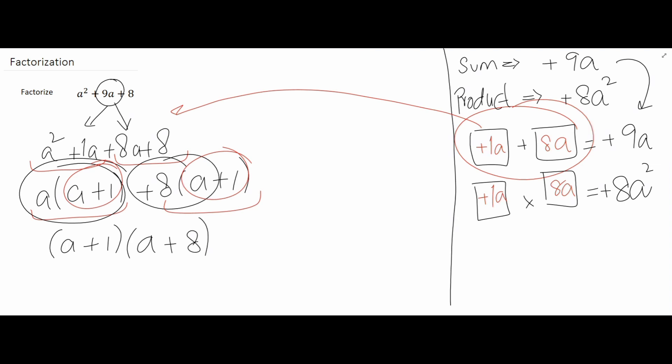So a plus 1 and a plus 8 are the two factors of a squared plus 9a plus 8. That means these two numbers can divide the expression a squared plus 9a plus 8 without leaving any remainders.